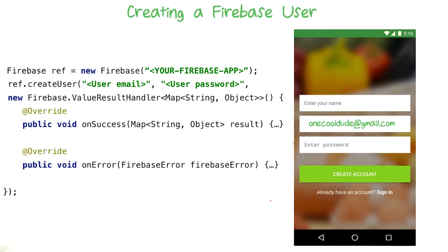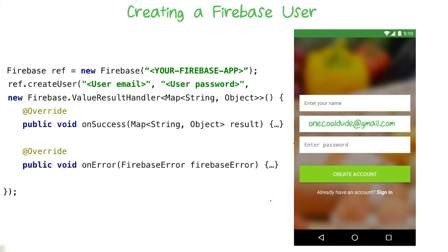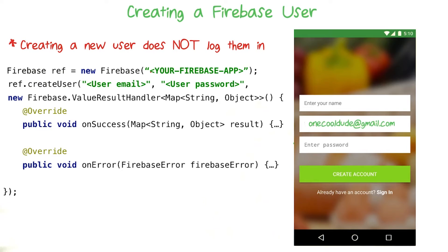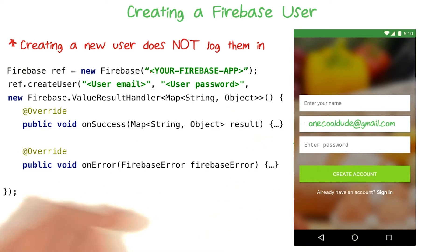If you use a value result handler, like I'm doing right here, when onSuccess gets called, you get an extra little map of information that contains additional login information for the new user. Just a quick note: when you're creating a user, you actually don't log them in — you have to call a separate method to do that. In shopping list plus plus's login flow, we don't even want to log them in on this page. We have a completely separate activity, the login activity, and that's where we log our users in. That's pretty much everything you need to know about onSuccess.